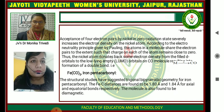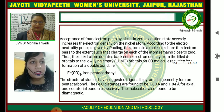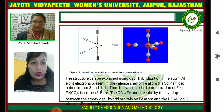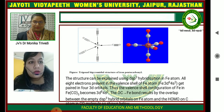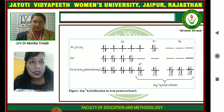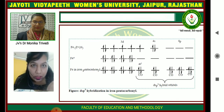Next is Fe(CO)5, iron pentacarbonyl. It has a trigonal bipyramidal structure. Iron in the ground state has 3d6 4s2 configuration, and in the excited state it becomes 3d8 4s0 — wait, it becomes 3d8 4p2 — giving five vacant orbitals to combine with CO ligands, resulting in dsp3 hybridization.